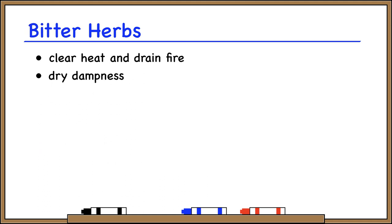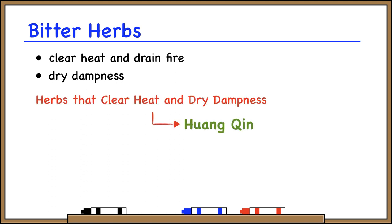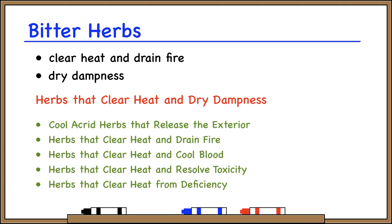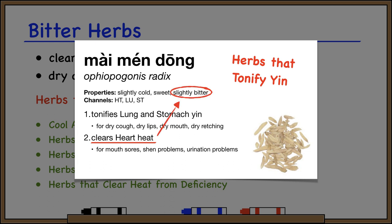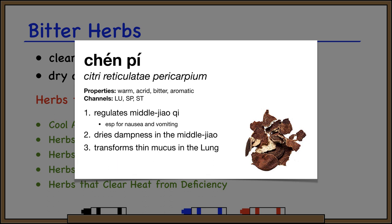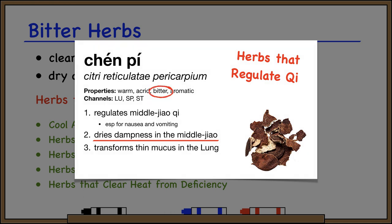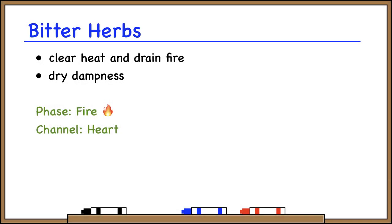Bitter herbs clear heat and drain fire, and they also dry dampness. So we have a category called herbs that clear heat and dry dampness — the one we learned is Huang Qin. Even herbs not in one of these categories can be marked bitter if they have some function of clearing heat. Looking again at Maimondong, it's in the category herbs that tonify yin, so its main action is tonifying yin, but it has this secondary function of clearing heart heat, which is why it's marked slightly bitter in flavor. And then some herbs don't clear heat but do dry dampness — Chen Pi, aged tangerine peel, is warm in temperature so it doesn't clear heat, but it has a secondary function of drying dampness, so it's marked bitter in flavor. Of the five phases, bitter corresponds to fire and the heart channel.